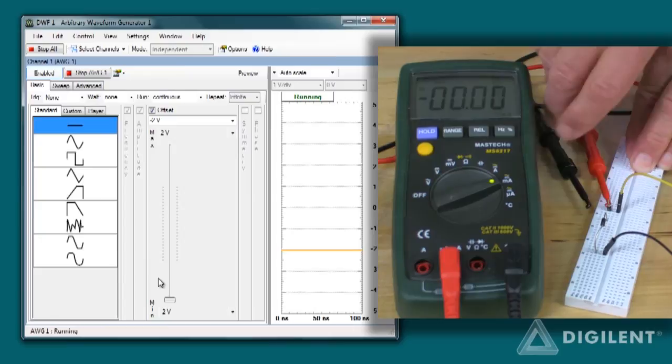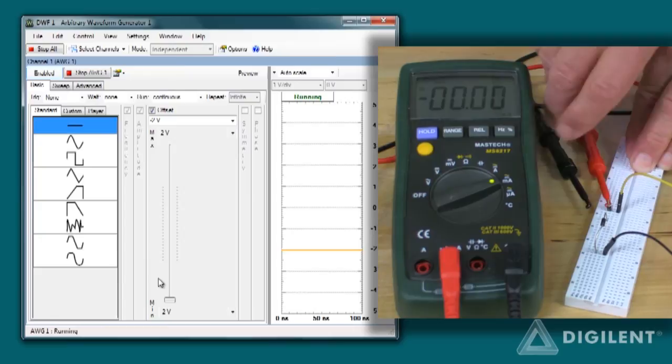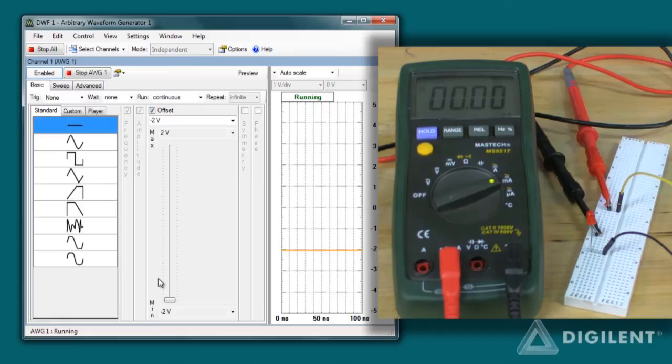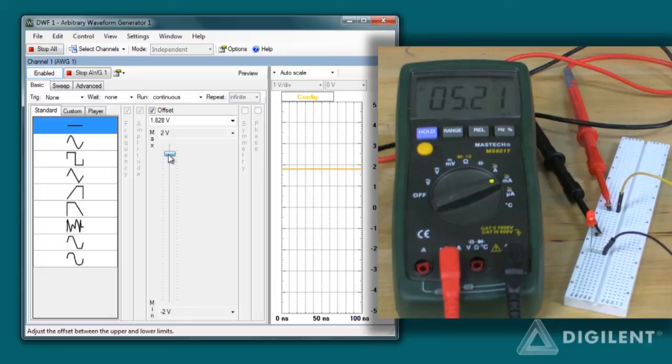Now let's do the same test with an LED. The LED doesn't allow current to flow through it until we get to about 1.6 or 1.7 volts. So the LED's threshold voltage is higher than our previous diode. However, once we do start flowing current, the LED lights up.